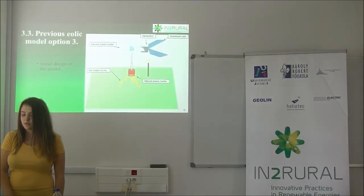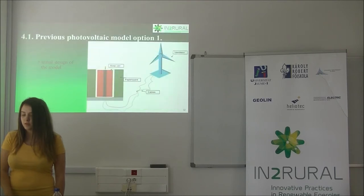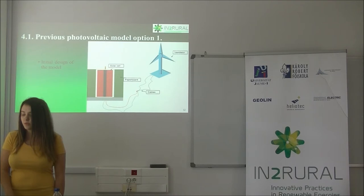The third previous hydraulic model is made from two half plastic bottles, ice cream sticks, a generator, and so on. The first previous hydraulic model also uses, for example, a solar cell, paper board, cables, and a ventilator.